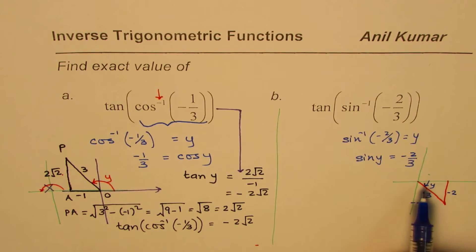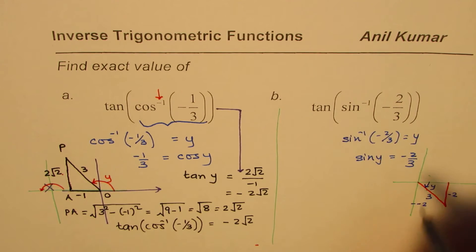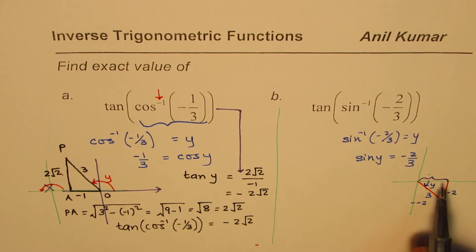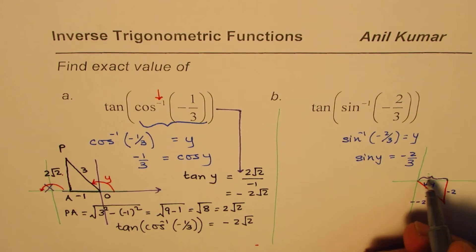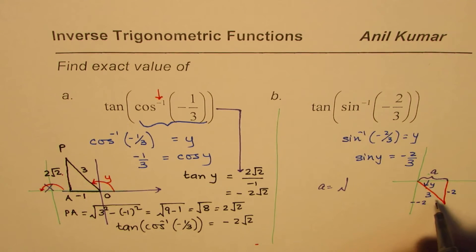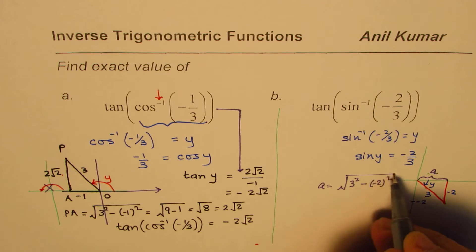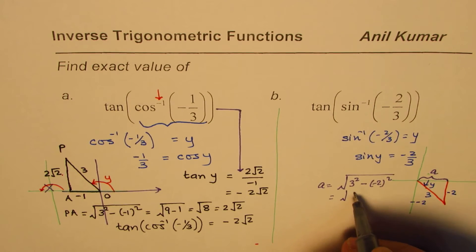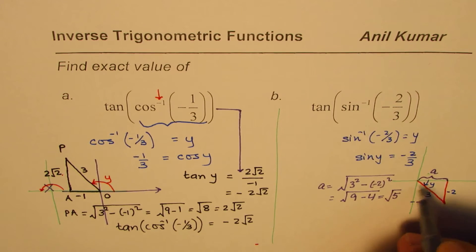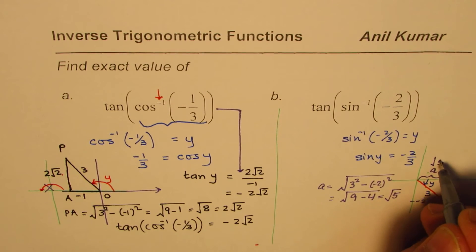So what you need to find is now the adjacent side. This is what you need to find since tan is ratio of opposite to adjacent. We could use Pythagorean theorem to find this. So adjacent side, let me call this as a. So a is equals to square root of (hypotenuse² - (-2)²), and that gives you square root of (9 - 4), which is equals to square root of 5.